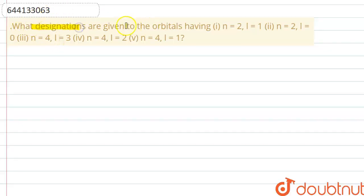Hello everyone, this is our question. Let me explain it to you. What designations are given to the orbitals having: In the first case, we are having n = 2, l = 1. This means there is a p orbital that we are talking about, and the n value is giving us the shell number, that is second shell. So the orbital designation would be 2p.